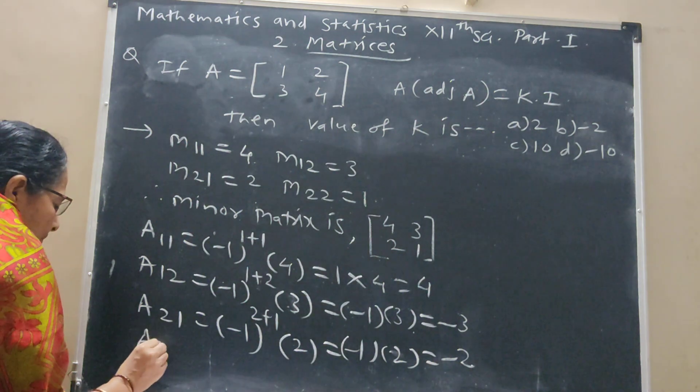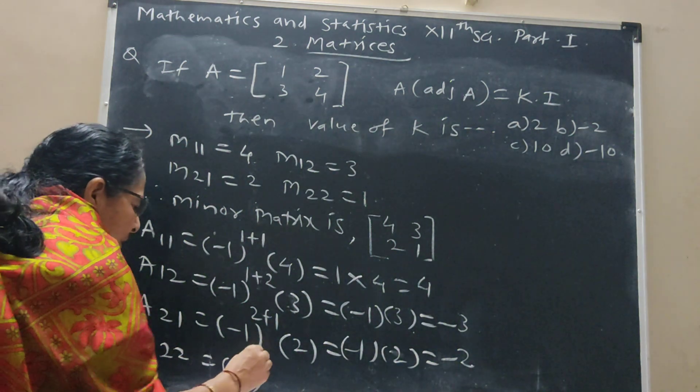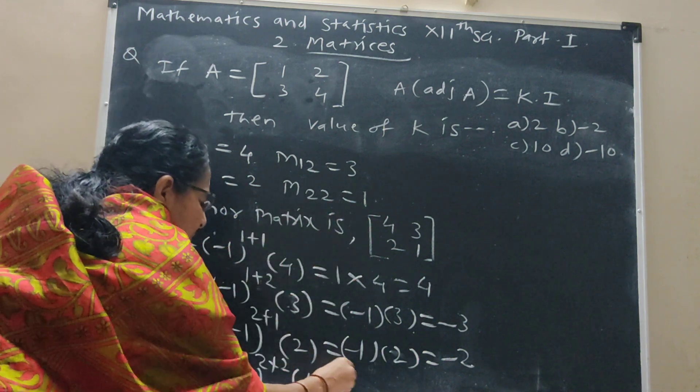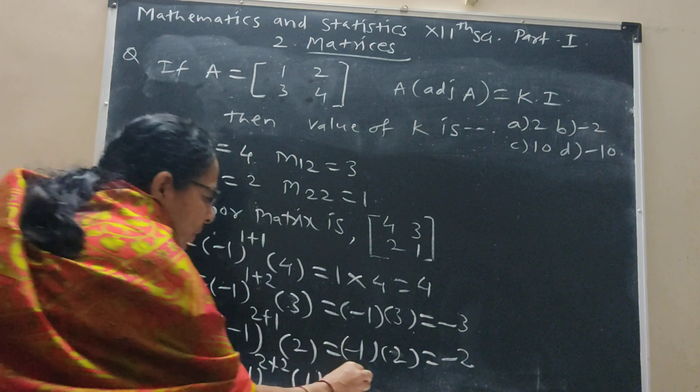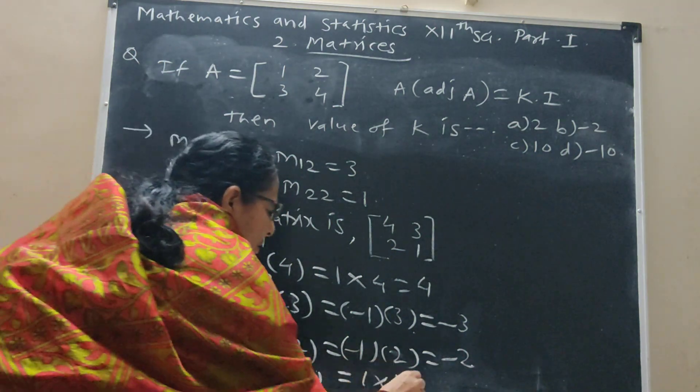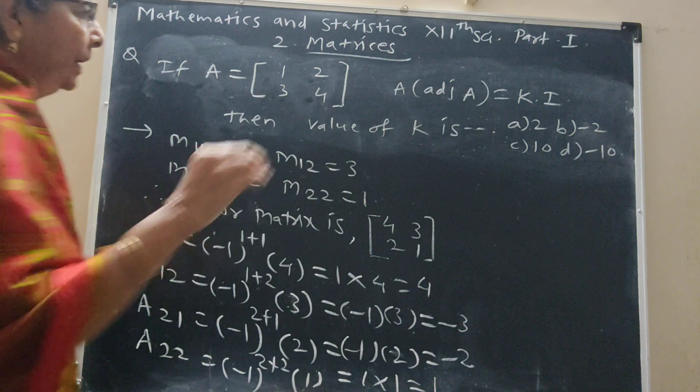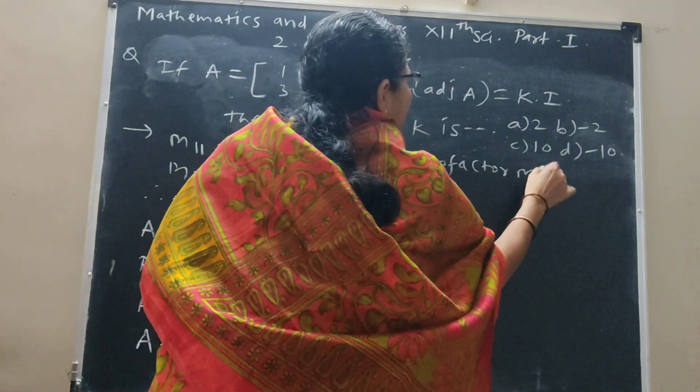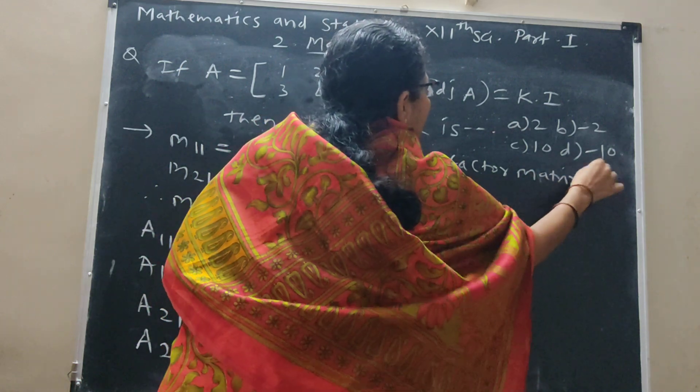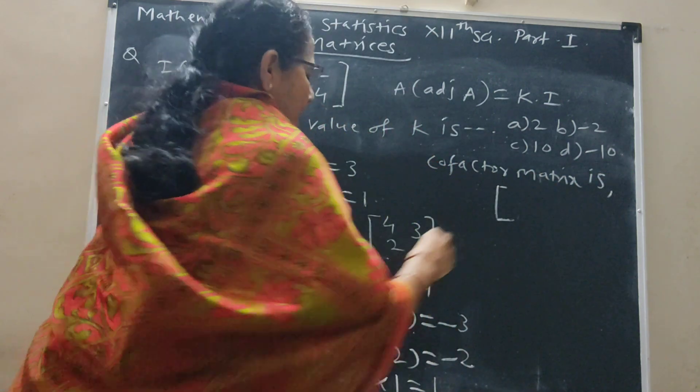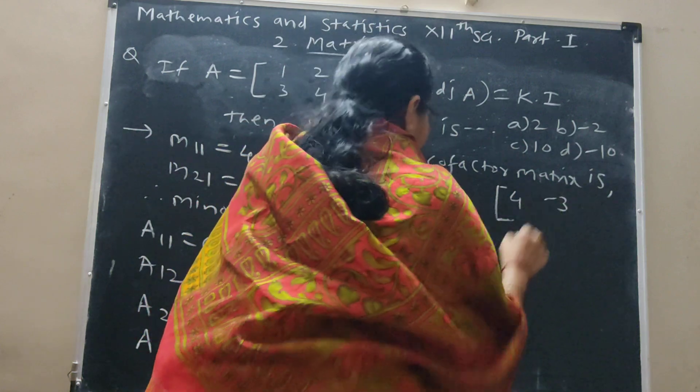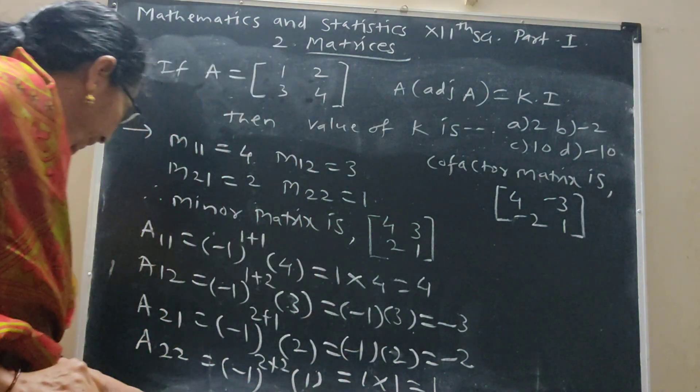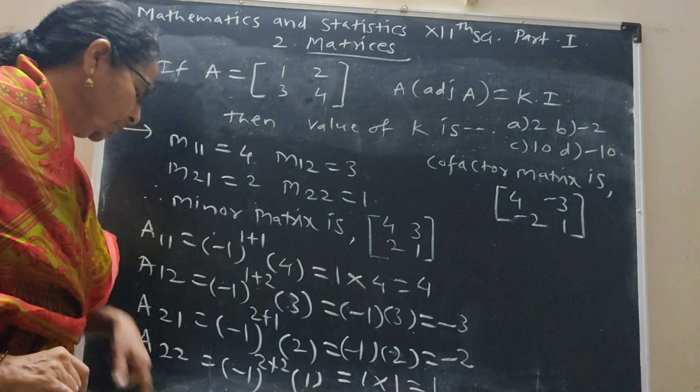A_2,2, (-1) raised to 2 plus 2, with respect to minor 1. Power even will be 1. This is 1, product 1. So, cofactor matrix is [[4, -3], [-2, 1]]. 4, -3, -2, 1.